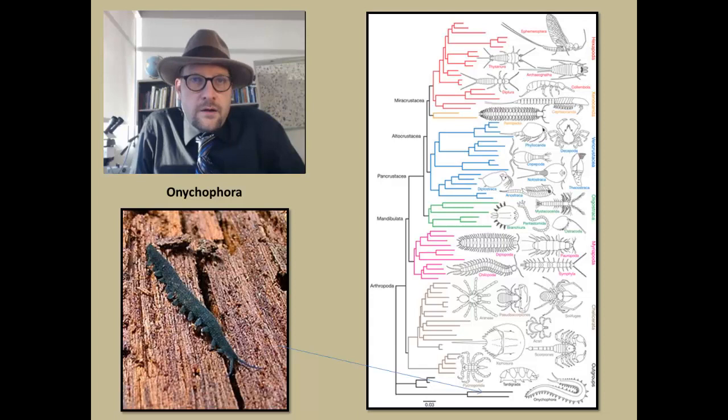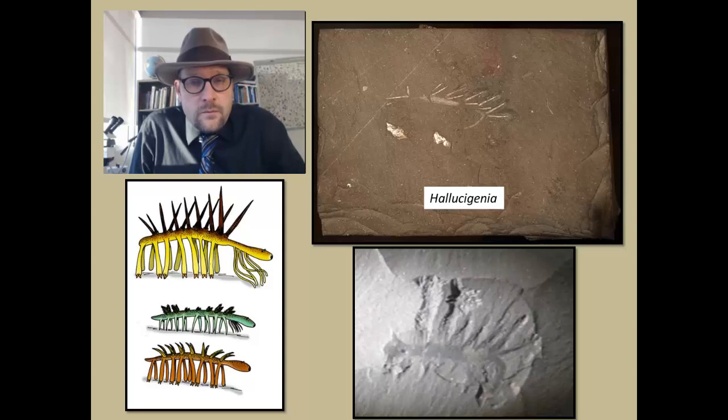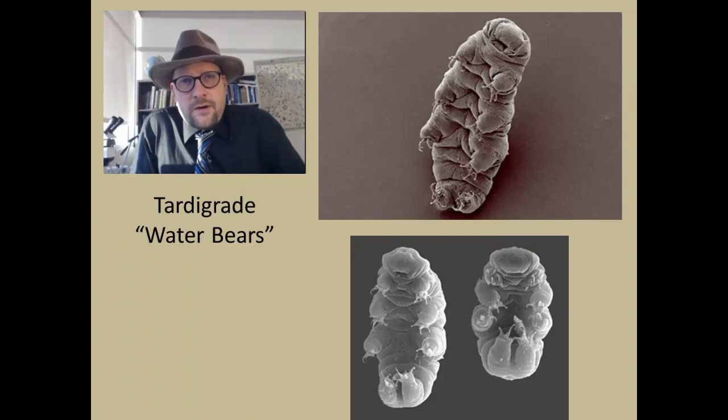The first group is the Velvet Worms. These are the Onychophora, which means the claw bearers. They are often related to the very strange and bizarre Hallucigenia from the Burgess Shale of Canada. These are weird fossils that people have puzzled over what they actually are, but most people place them within the Velvet Worm group, the Onychophora. They are segmented; they have spines or limbs that project out of the skeleton. They don't have an exoskeleton like other arthropods, so they are often placed outside of the arthropods.